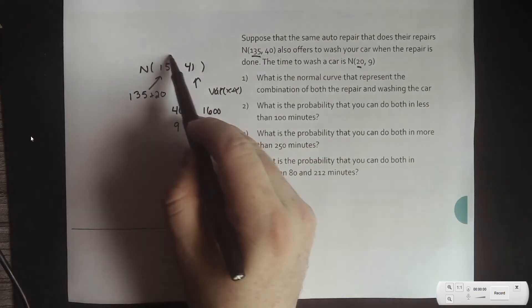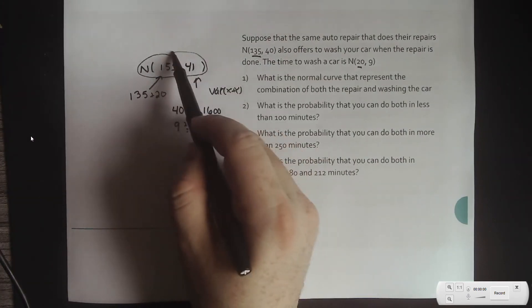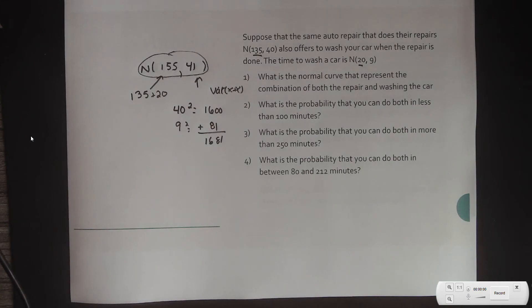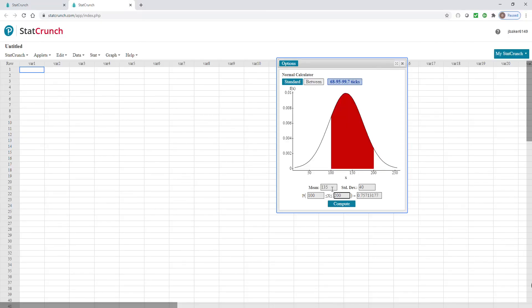So, this is my new normal curve. Now, if I wanted to find the probabilities, it's the same as just applying it to a normal curve. So, I'll flip this back over again. My mean was 155.